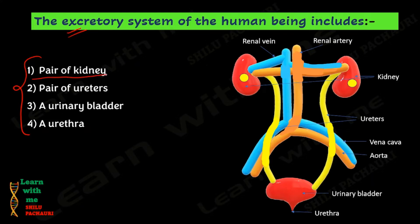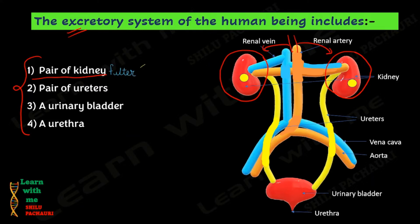The first component is the pair of kidneys. As you can see in this image, these bean-shaped structures are the kidneys. They are located in the abdomen, on the right and left side of our spinal cord. The main purpose of the kidney is filtration — all the urea, salt, and excess water present in our blood is absorbed by the kidneys and converted into urine.